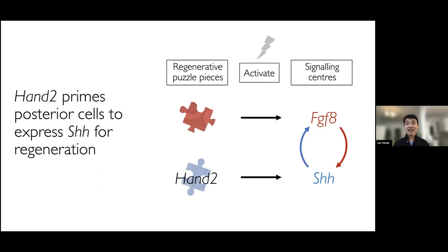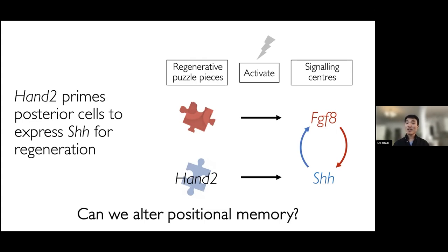Together, these data and others support that continuous expression of HAND2 throughout life in the axolotl primes posterior cells in the limb to be able to express sonic hedgehog after an amputation. This could be one distinguishing feature between the red and blue puzzle pieces in the limb. But this leads me now to the second part of the talk, in which I wanted to ask: are these positional memory states fixed once they're established in the embryo, or can they actually be altered through acute treatments? Is positional memory fixed or is it reprogrammable?